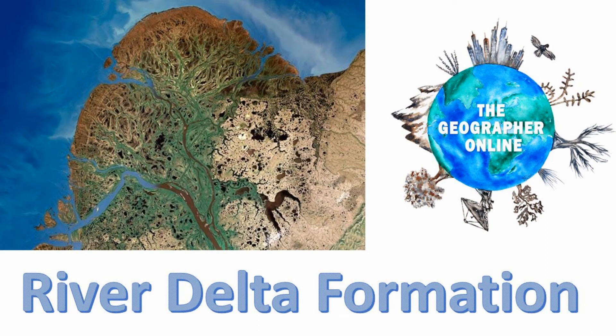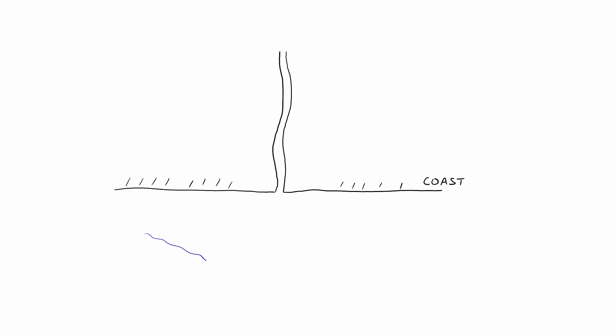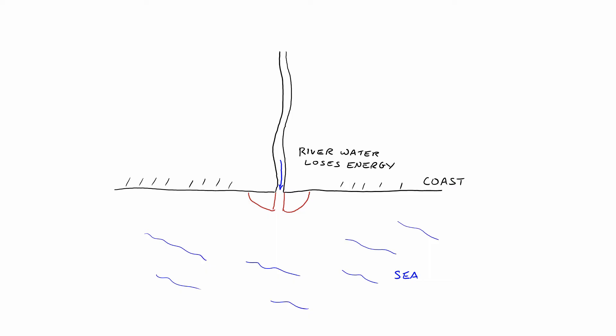Hello everyone. In this video we're going to be looking at the formation of river deltas. River deltas are depositional landforms, and what occurs is a river will drain either into the sea or into a lake. When the water descends from the river and flows down, when it comes into contact with that standing body of water, it will begin to lose energy.